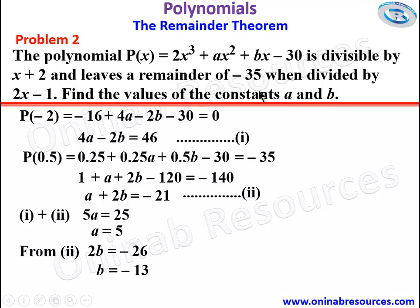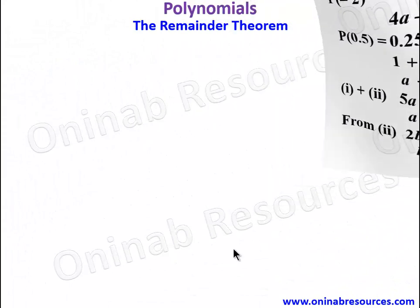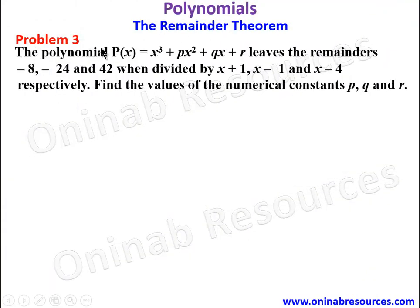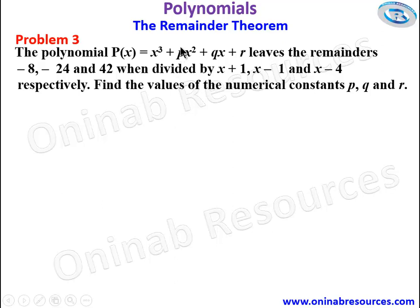We have succeeded in finding the values of the constants a and b. That is all for problem 2. For problem 3, the polynomial p of x equals x cubed plus px squared plus qx plus r leaves remainders of negative 8, negative 24, and 42 when divided by x plus 1, x minus 1, and x minus 4 respectively. Find the values of the numerical constants p, q, and r. Since there are three unknowns, we substitute p of negative 1, p of 1, and p of 4 to form three equations.